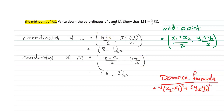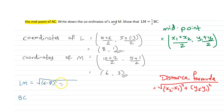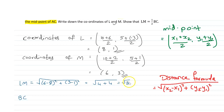Using this formula, we find the distance LM. The distance is the square root of (6 minus 8) squared plus (3 minus 1) squared. That gives (-2) squared = 4, and (2) squared = 4. So the square root of 4 plus 4 is the square root of 8, which equals 2√2. So the length of LM is 2√2 units.